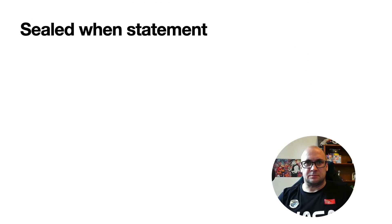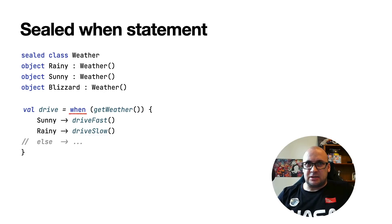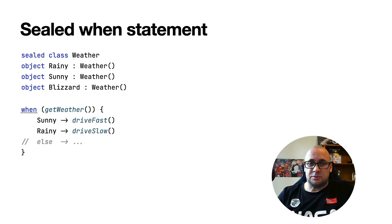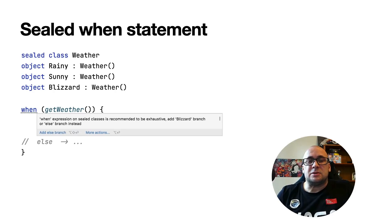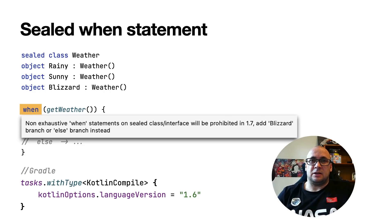The when statement for sealed classes and Boolean types is going to be exhaustive by default. The when expression is a very useful feature in Kotlin because it's exhaustive by default when used with sealed classes, enums, and Boolean types. The exhaustive when expression contains branches for all types of a subject, or some types plus an else branch. If not all options are covered, the result is a compilation error. However, it is possible to use when as a statement rather than an expression — in this case, we don't return any value and the situation results only in a weak warning in the IDE. Starting from Kotlin 1.5.30, if the when statement is not exhaustive, the compiler will warn you about it. There are even plans to make it a compiler error in future versions of Kotlin. To see this behavior, you need to set the language version to 1.6.